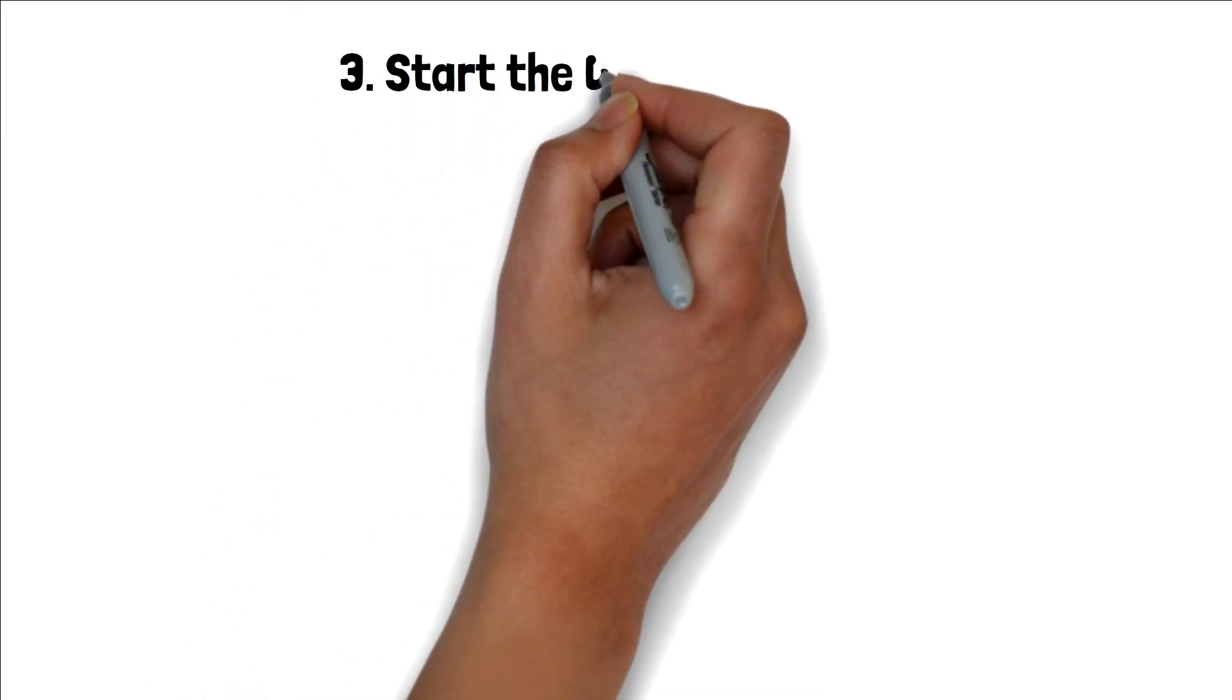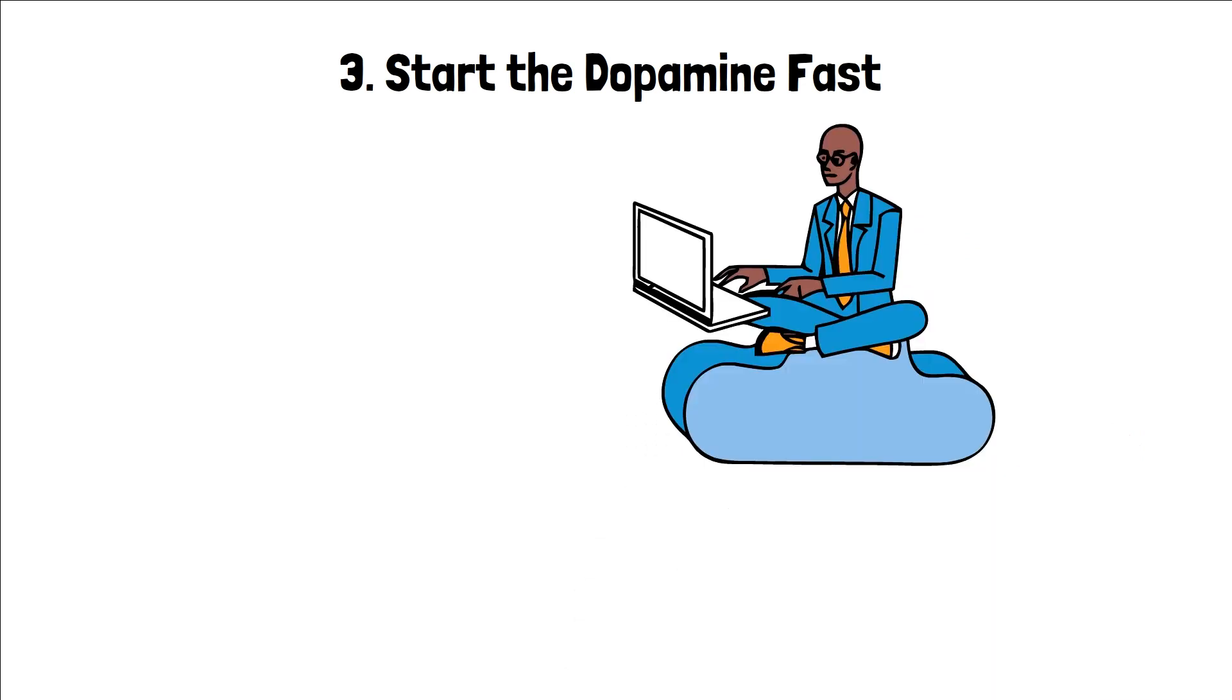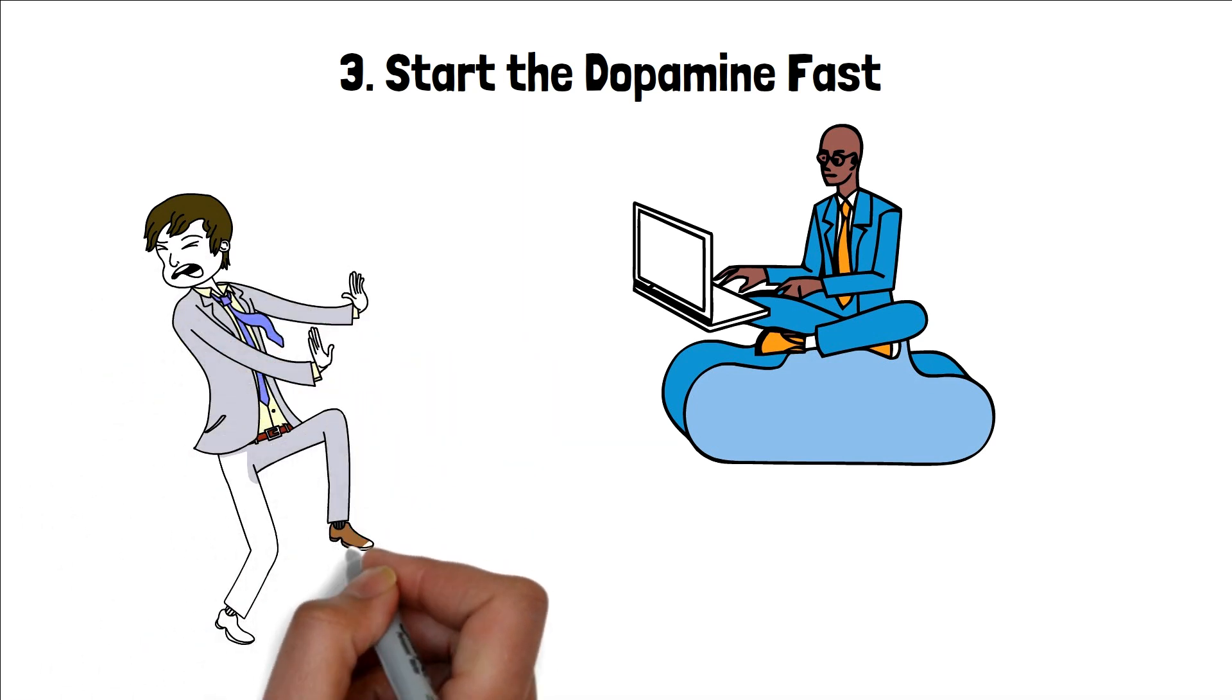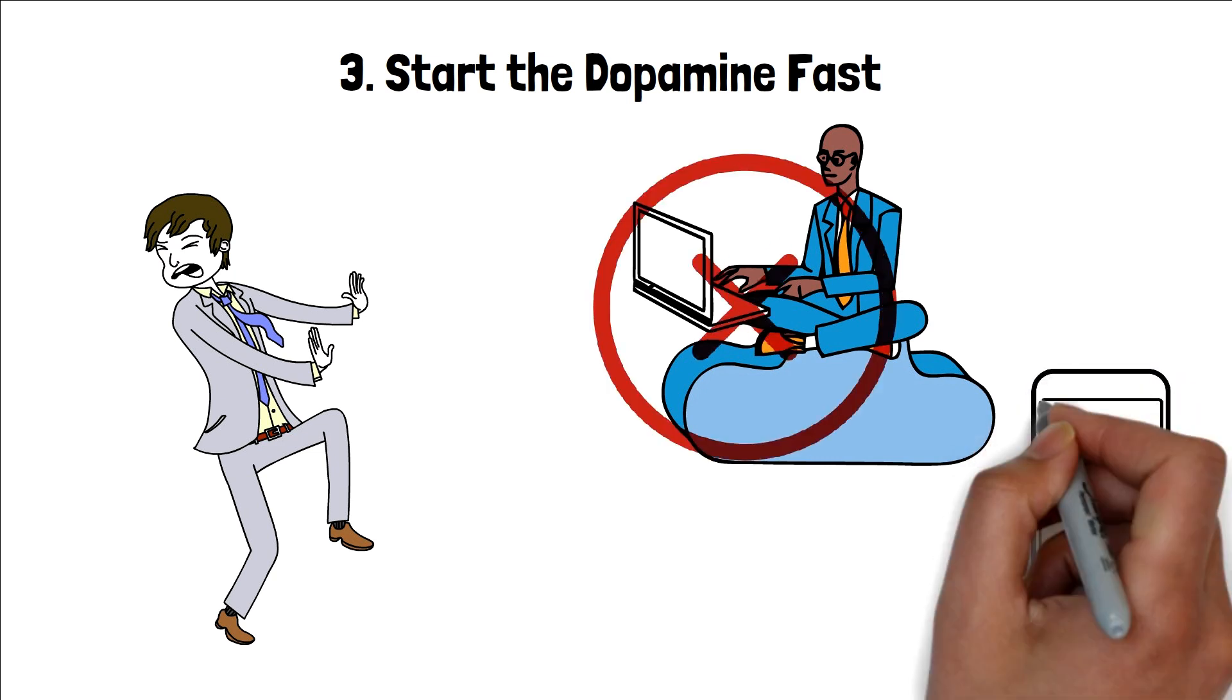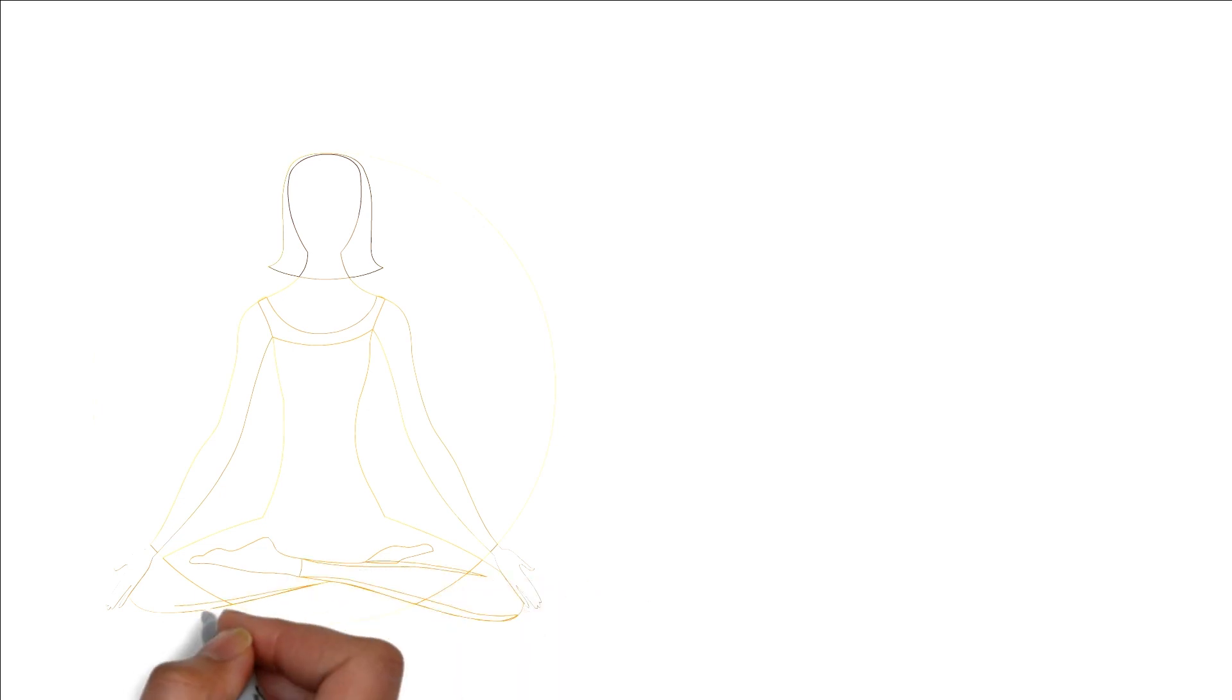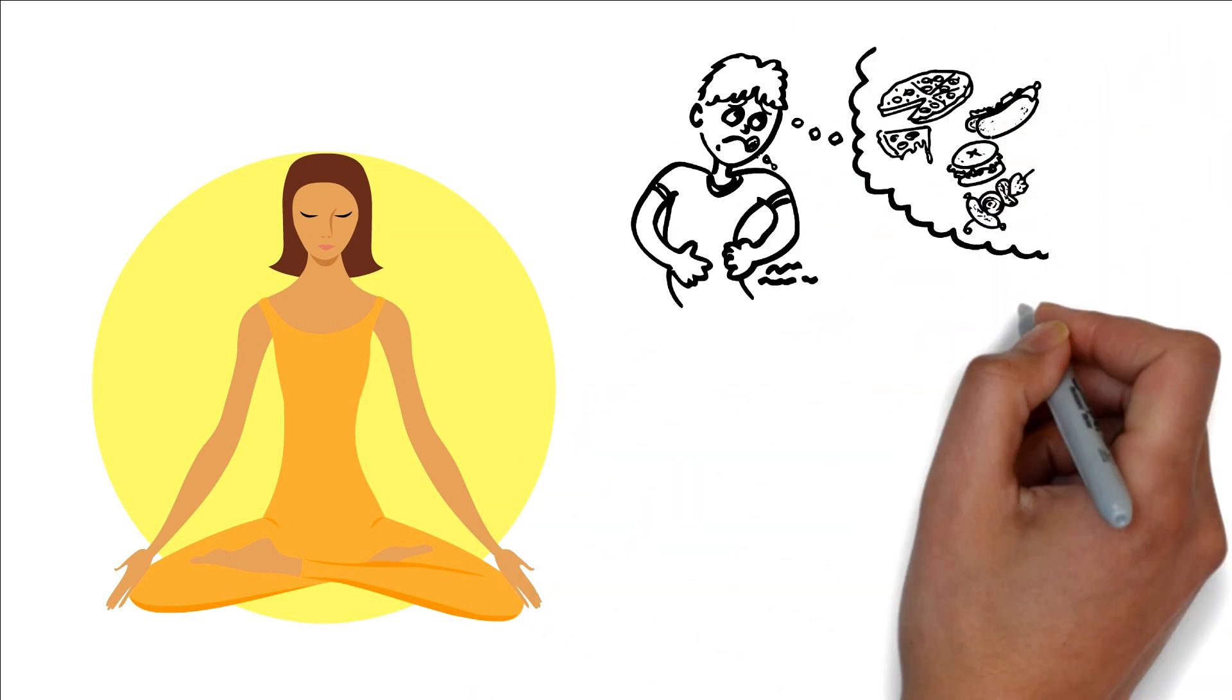3. Start the dopamine fast. Time to hit the reset button with a dopamine fast. Think of it like a mini-retreat for your brain. For a day or maybe even longer, the goal is to give yourself a break from those super-stimulating activities that flood our brains with easy dopamine hits. That means waving goodbye to electronics. Yep, even that addictive phone and binge-worthy Netflix series. Let's press pause on the groovy tunes, too, unless it's some soothing meditation track that calms the soul. Hungry? Stick to wholesome foods and try to avoid reaching for those sugary or junk snacks that give short-lived pleasure.